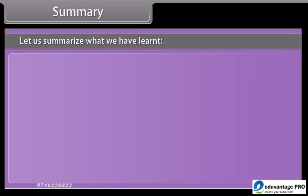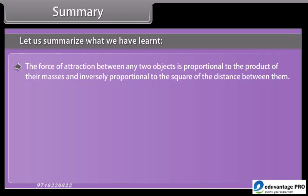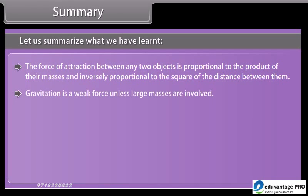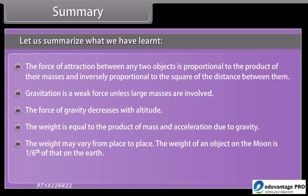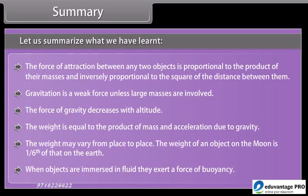Summary: The force of attraction between any two objects is proportional to the product of their masses and inversely proportional to the square of the distance between them. Gravitation is a weak force unless large masses are involved. The force of gravity decreases with altitude. Weight equals mass times acceleration due to gravity and may vary from place to place. The weight of an object on the Moon is one-sixth of that on Earth. When objects are immersed in a fluid, they experience a buoyant force.